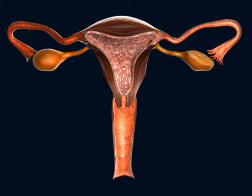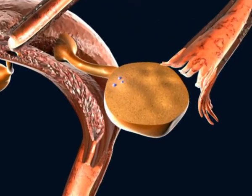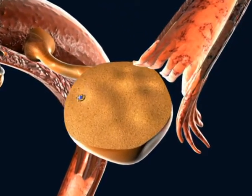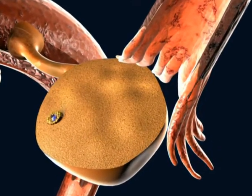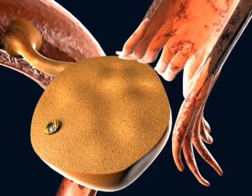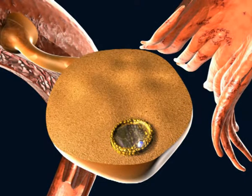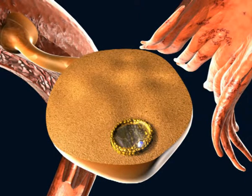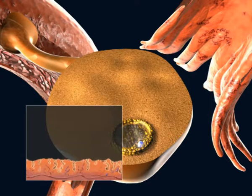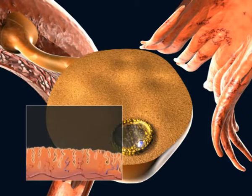At the start of the menstrual cycle, a cohort of follicles starts to grow, but generally only one continues to develop. This follicle is referred to as the dominant follicle. In its interior, the follicle contains an immature oocyte. This follicle increases in size by one to two millimeters per day. The follicle produces estrogen and causes the lining of the uterus, the endometrium, to thicken.